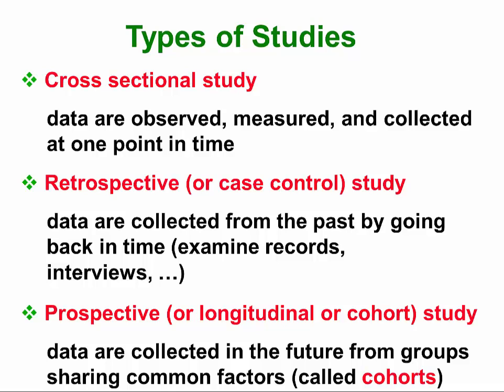For example, if you're a junior and a study is going to follow the juniors, that would be an example of a prospective study, and the junior group would be called a cohort.